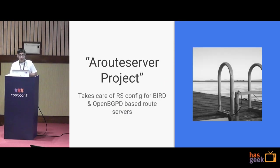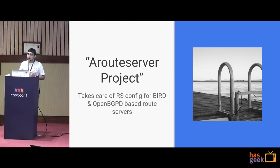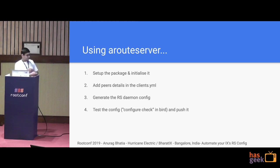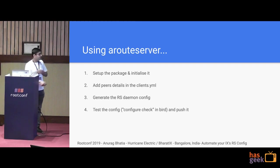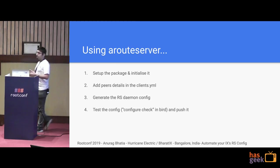The solution is a tool called ARoute Server — an open source tool. The developer is one of the engineers at Cloudflare, and he has written this excellent tool. It's on GitHub along with the documentation. It supports generating route server config for both BIRD and OpenBGPD. OpenBGPD is relatively new while BIRD is quite old, advanced, and stable. Lots of exchanges at large scale utilize BIRD. You set up the package, initialize it, add peer details in clients.yml, and generate the route server daemon config — specifying whether you want BIRD or OpenBGPD syntax accordingly.